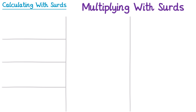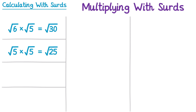Now we're going to look at doing some multiplications with surds. The multiplication rule said that the square root of 6 times the square root of 5 is just the square root of 30. What if both numbers inside the surds are the same, like the square root of 5 times the square root of 5? Multiplying 5 and 5 gives 25, so this is the square root of 25, which is just 5. This property works for any number: the square root of 8 times the square root of 8 is just 8.